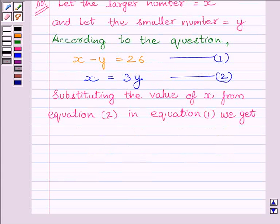Now, substituting the value of x from equation 2 in equation 1, we get 3y minus y is equal to 26. This implies 2y is equal to 26.